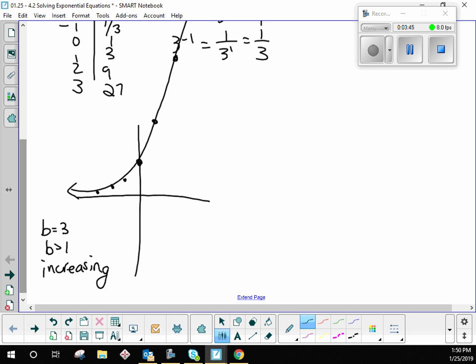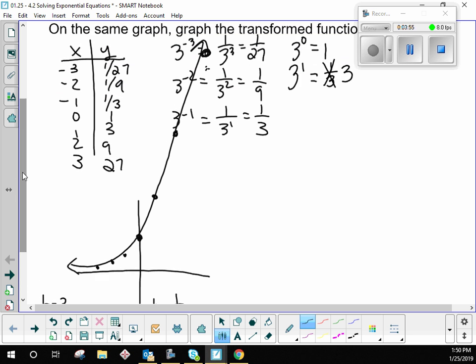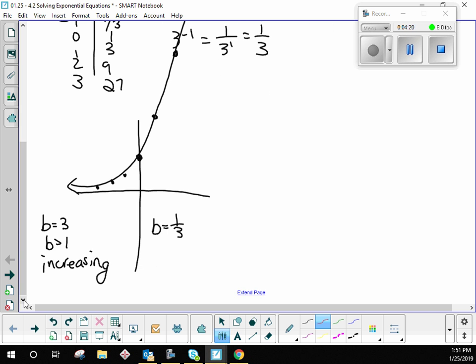The only difference, if B was less than 1, if B was a fraction, like let's say B was 1 third, so it's less than 1. When you start doing those exponents, what basically happens is these values, 3, 9, 27, would be here, and these fractions would be here, so you'd have a graph that looks like this, only it's decreasing. Because when you get those fractions, the denominator gets bigger and bigger, it gets smaller and smaller and smaller.